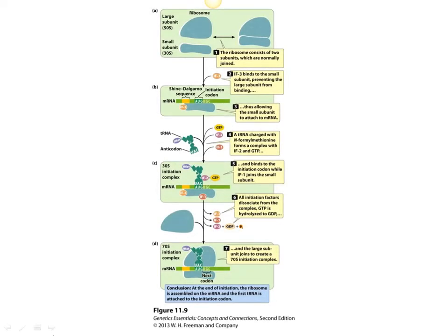This figure shows basically what you saw in the animation of how translation happens. The two subunits only come together when they are going to be translating an mRNA. You can see the assembly of the initiation complex here, which means the small subunit of the ribosome, the large subunit of the ribosome, and the tRNA plus the mRNA all together — that gets the whole process initiated.